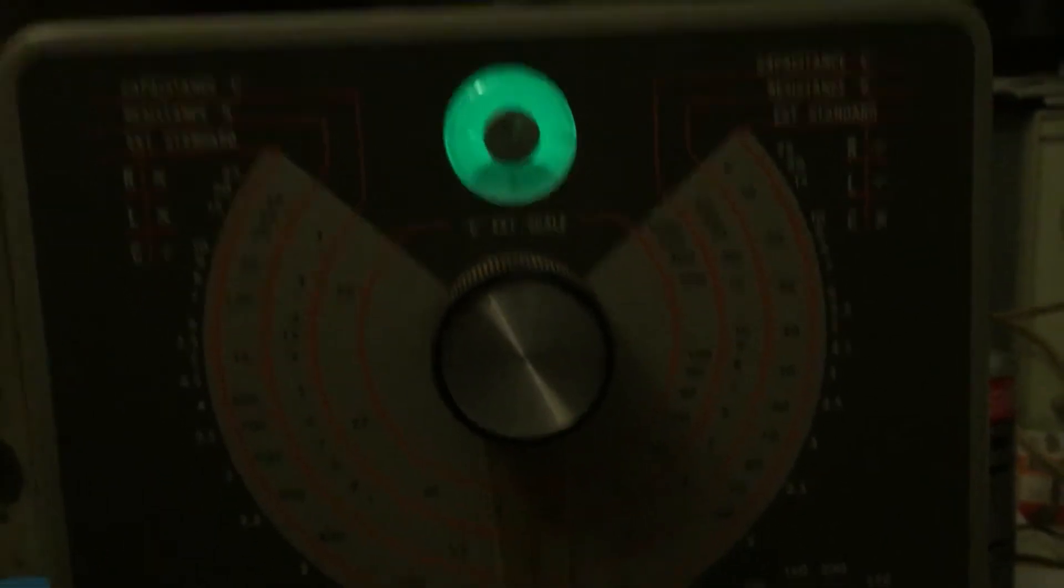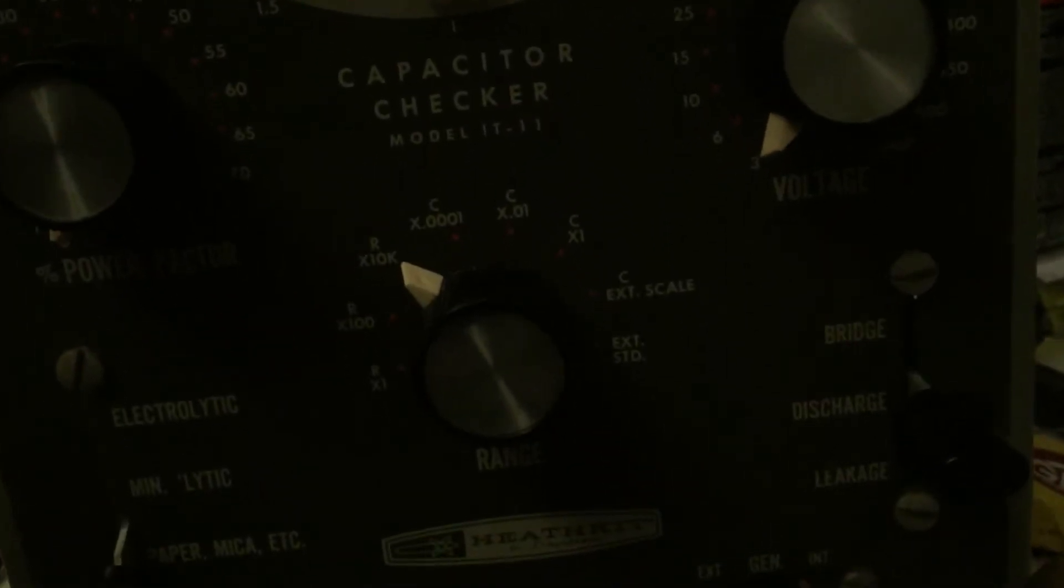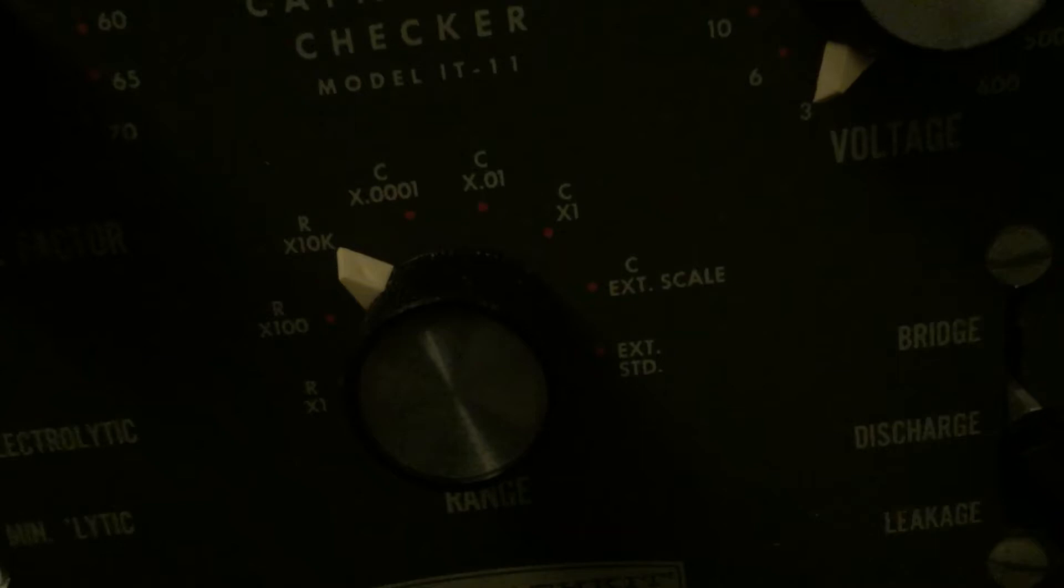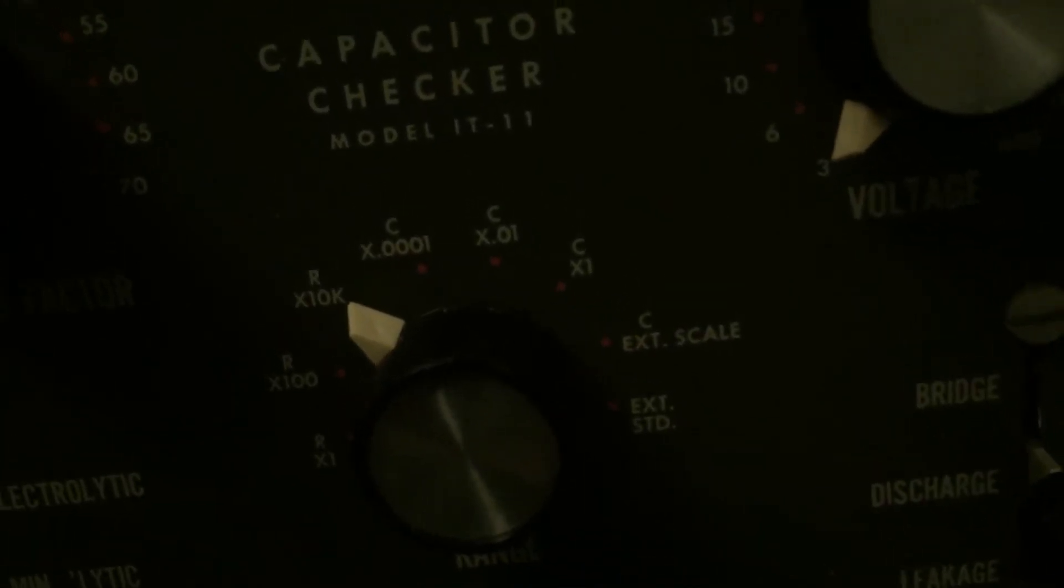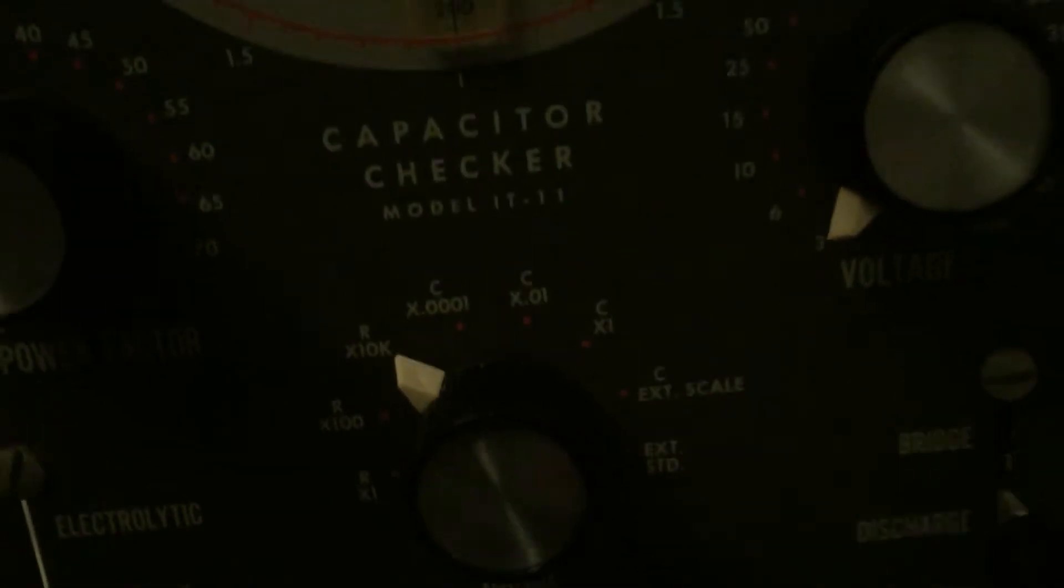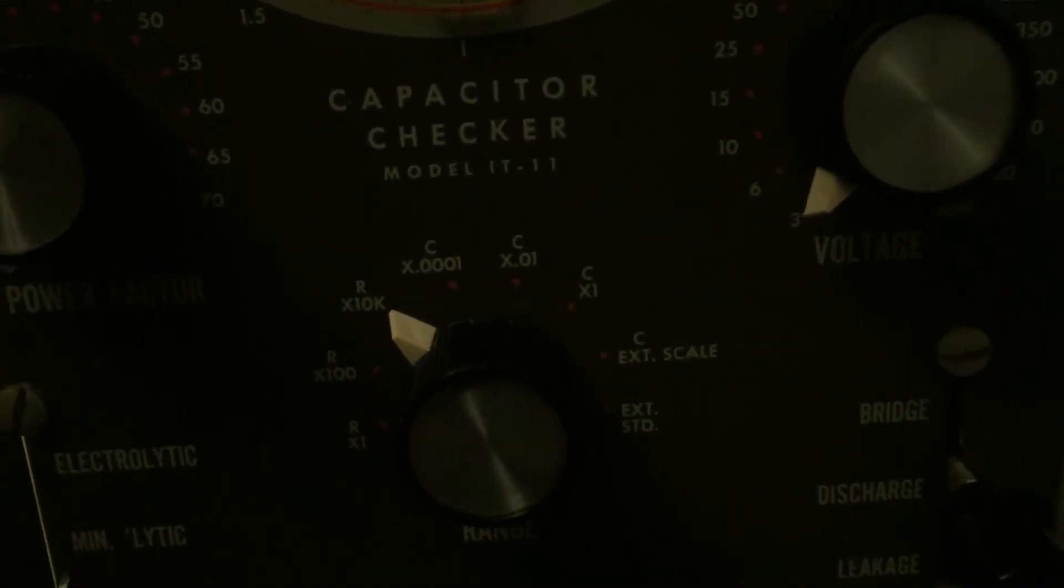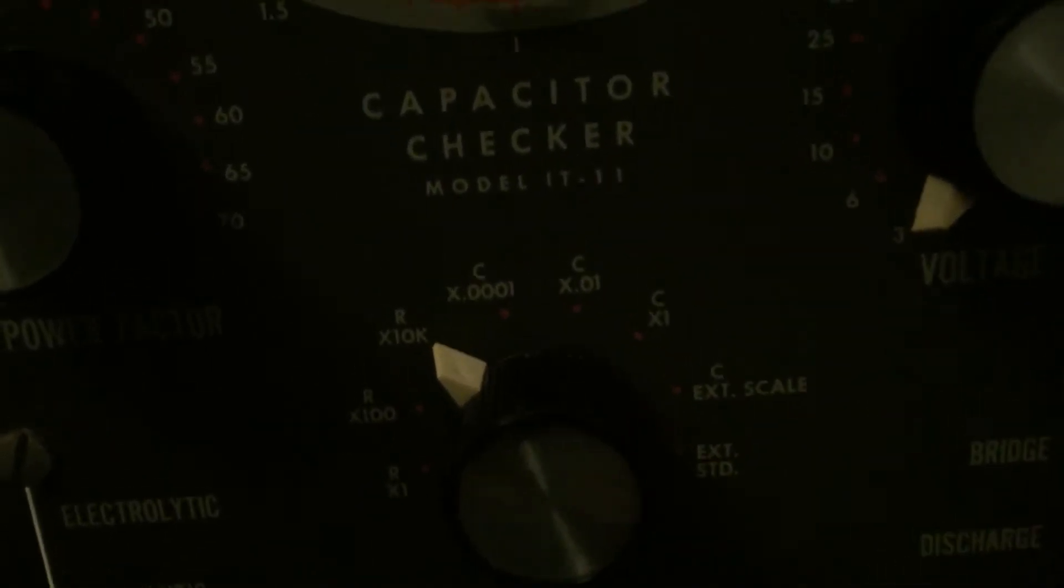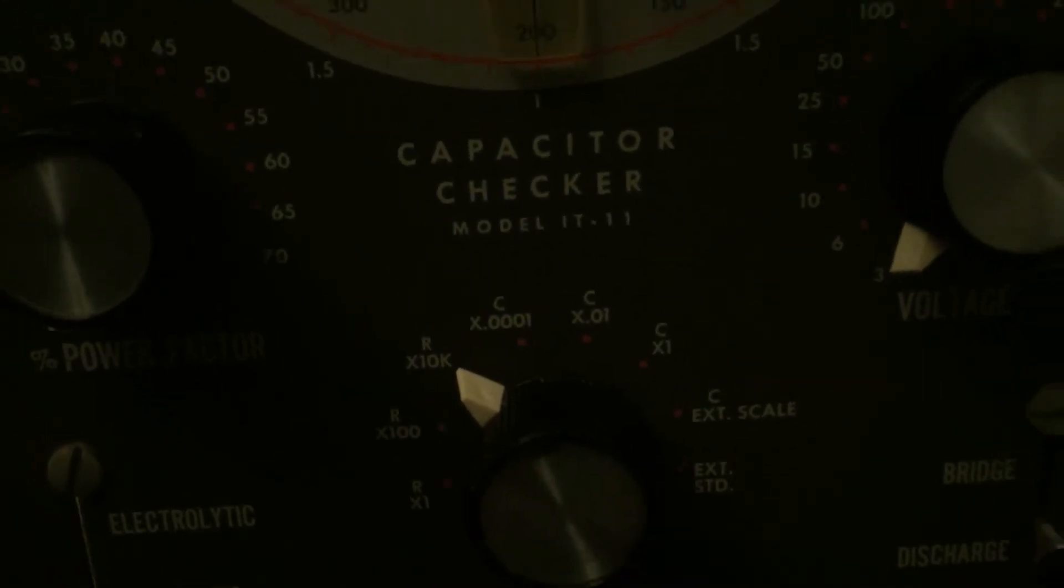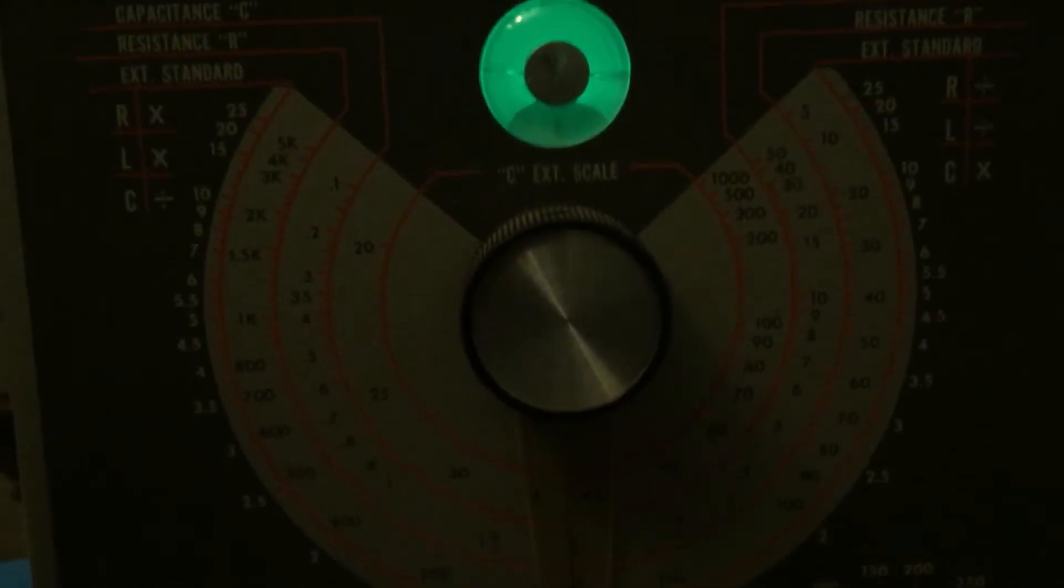Right now everything is working on this except for the measurements of the last two capacitor ranges x.01 and x1, and they're not working because they use electrolytic capacitors and those electrolytic capacitors are out of spec. The .0001 is a mica capacitor and it works just fine.